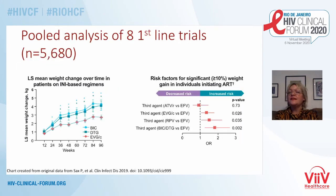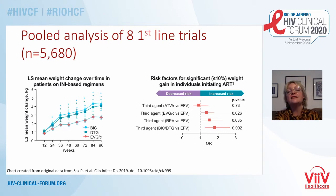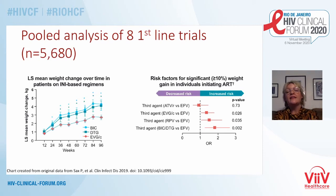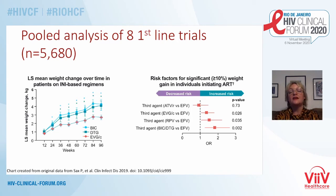One issue for integrases is weight gain. The SACS analysis of eight first-line Gilead trials demonstrates that integrase inhibitors — BIC, dolutegravir and elvitegravir — are all associated with a greater risk of significant weight gain than efavirenz, whereas for atazanavir there was no difference. There are numerous cohort and clinical trial data showing our second-generation integrases and TAF are both particularly associated with weight gain.